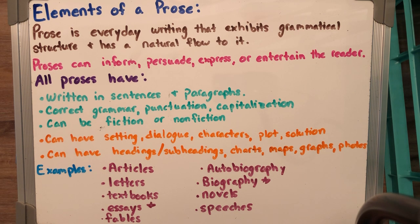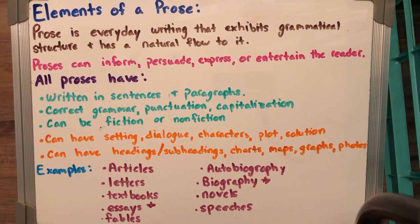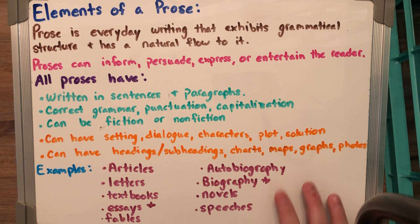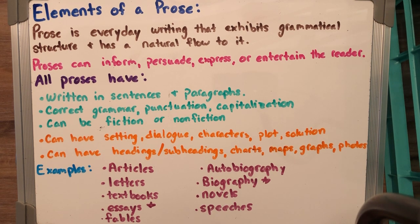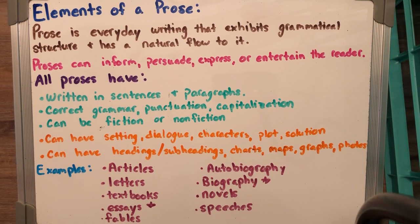Prose is really simple because it's everyday, so there are a lot of examples: newspaper articles, magazine articles, letters, textbooks, essays — I put a star there because you guys write so many essays for me, so you're writing prose right there. Fables like Aesop's fables, autobiographies, biographies — you all wrote a biography for your wax museum. The novels and chapter books that you read are all prose, and speeches too, like Dr. Martin Luther King Jr.'s 'I Have a Dream' speech — that is a prose. Prose is just everyday language: the information from textbooks, readings from your sources, chapter books, essays, short paragraphs, and summaries — that's all prose.